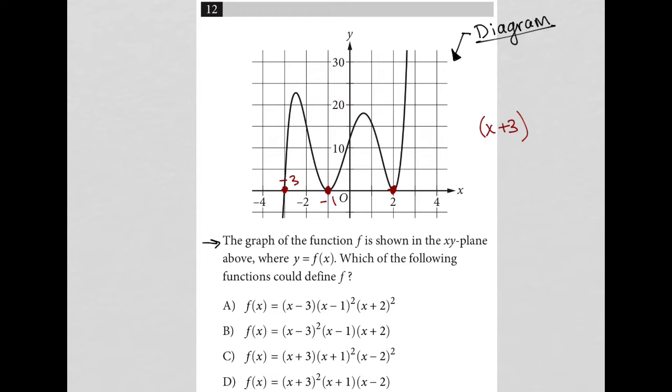We have another one here at negative 1, which means I should have x plus 1. Now notice the difference between the x-intercept at negative 3 and the x-intercept at negative 1. At negative 3, we're going through the x-intercept. At negative 1, we're bouncing off of the x-intercept. That tells me that this has to be squared.